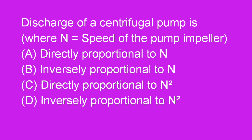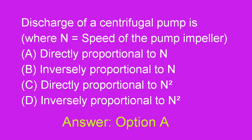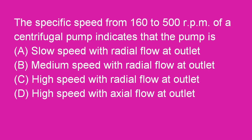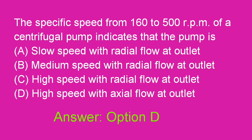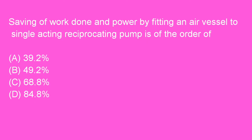Next question: Discharge of a centrifugal pump is directly proportional to N. Option A is right. The specific speed from 160 to 500 RPM of a centrifugal pump indicates that the pump is high speed with axial flow at outlet. Option D is right.